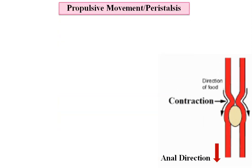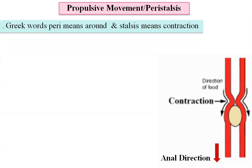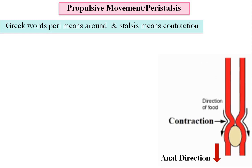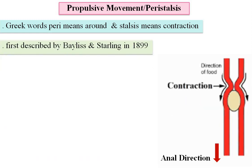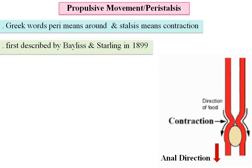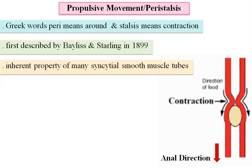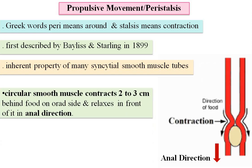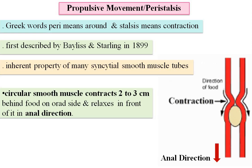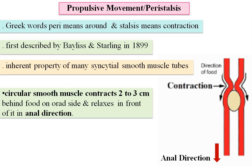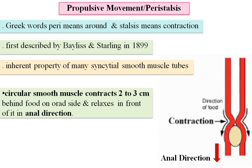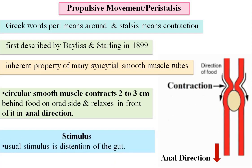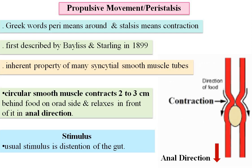The other type of movement is the propulsive movement, also known as peristalsis. The term peristalsis derives from two Greek words: 'peri' meaning around, and 'stalsis' meaning contraction. Peristalsis was first described by Bayliss and Starling in 1899. It is the inherent ability of smooth muscles to undergo peristalsis. In such movement, rings of circular smooth muscle contract 2–3 cm behind food in the oral direction and relax in front of it in the anal direction. The usual stimulus for peristalsis is distension of the gut; when food collects at any point, the stretching stimulates the gut wall to contract.